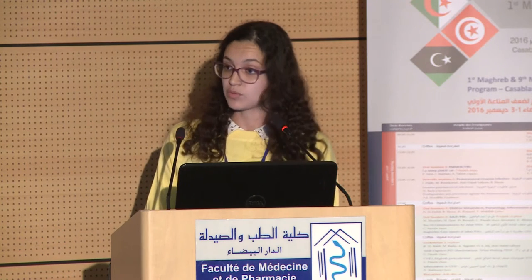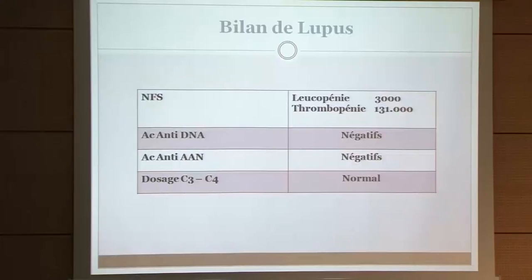For macrophage activation syndrome: CBC showed anemia at 5.7, but fibrinogen was at 4.3, ferritinemia at 352, and bone marrow aspirate showed regenerative marrow with absence of hemophagocytosis, not in favor of macrophage activation syndrome. Lupus was also considered but all relevant investigations were negative or normal.